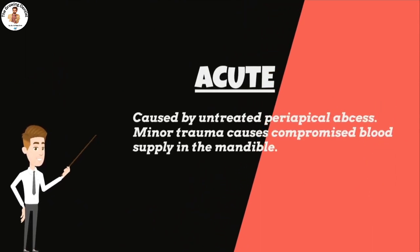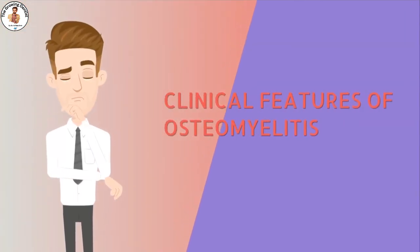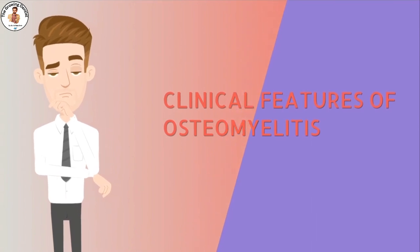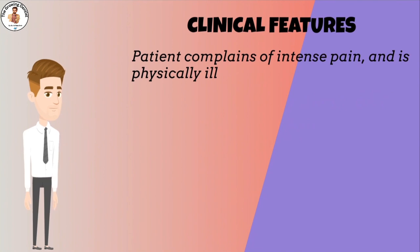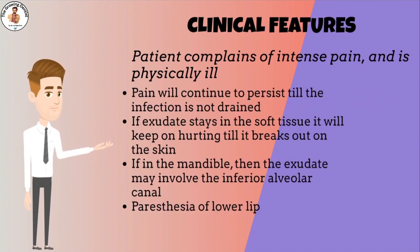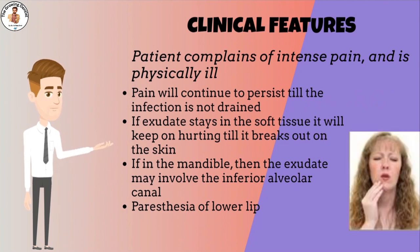A minor traumatic incident in the mandible causes a compromised blood supply. Clinical features include intense pain and the patient is physically ill. The pain will continue to persist until the infection is drained out of the soft tissue. If exudate stays in the soft tissue, it will keep on hurting until it breaks out on the skin or mucosa through the formation of a sinus.